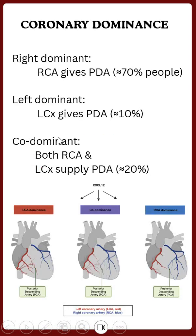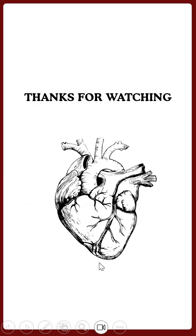Now coronary dominance. In right coronary dominance, the right coronary artery gives blood supply to the posterior descending artery. In left dominance, the circumflex artery gives the posterior descending artery. In co-dominance, both the right coronary artery and the left circumflex artery give the posterior descending artery.